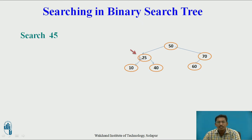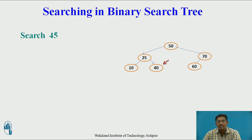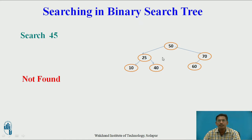Next, searching is done with 25. 45 is compared with 25 — since 45 is greater than 25, the next searching will be done on the right subtree. Next, 45 is compared with 40. 45 is not equal to 40, so we check: 45 is greater than 40, so the next searching will be done on the right subtree of 40. However, there is no right subtree of 40 — that is the end of the binary search tree. We conclude that 45 is not present in the given binary search tree.